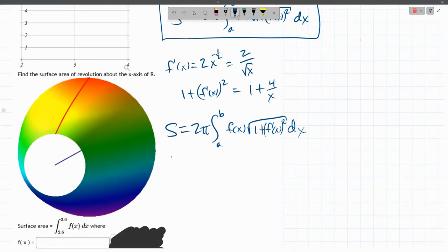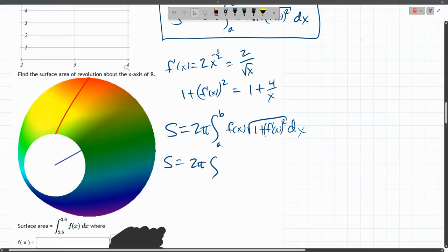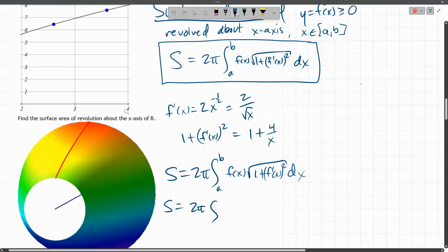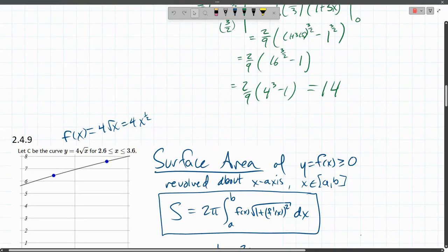Okay, we can put in most of this now. We are told a and b right here, they're beginning and ending x values. Now it's annoying that they're decimals. So let's write those in 2.6, 3.6.